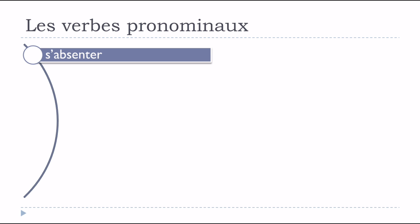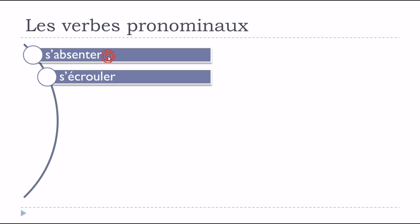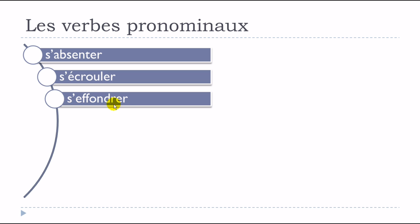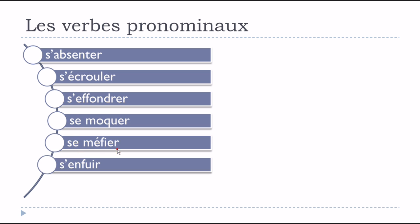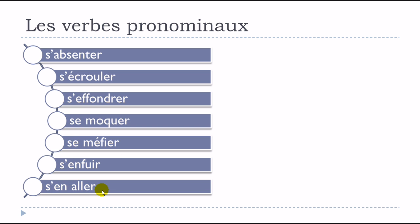Here are a few examples of verbs that only exist in pronominal form: s'absenter, s'écrouler, s'effondrer, se moquer, se méfier, s'enfuir, s'en aller. In all these cases, these verbs exist only with se before them — pour la forme pronominale.